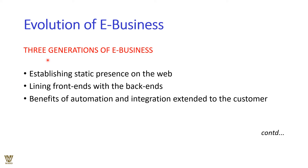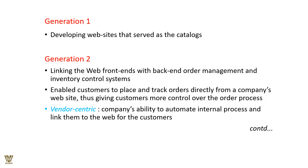There are three generations of e-business. Generation one was about establishing a static web presence — a fixed flow of information disseminated to audiences. Generation two involves linking the front-end web store with the back-end order management and inventory control system, giving real-time access to understand what is available and what is not.